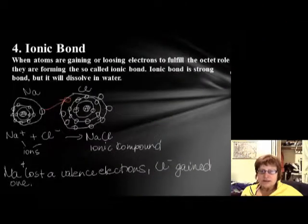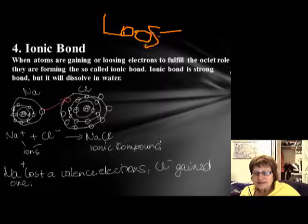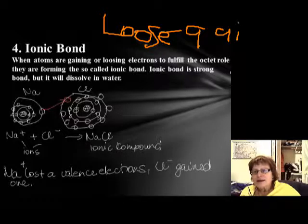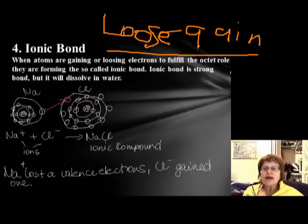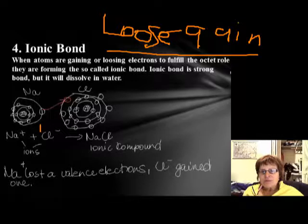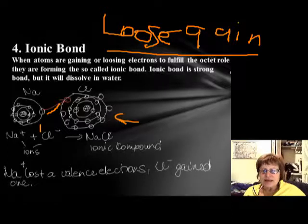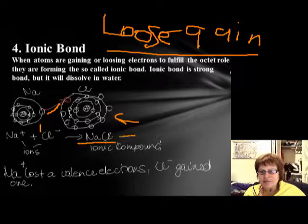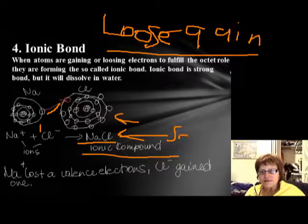For ionic bonds, the keyword is losing or gaining electrons. Sodium is here giving away one electron, and chlorine is gaining that electron. We can write it as an equation: Na+ plus Cl- gives NaCl. NaCl is an ionic compound—that's your salt.